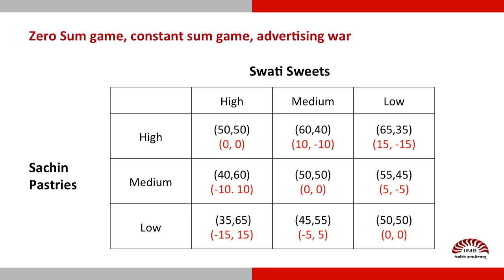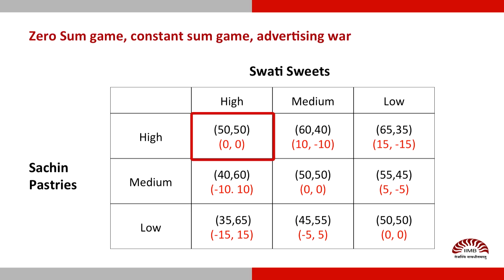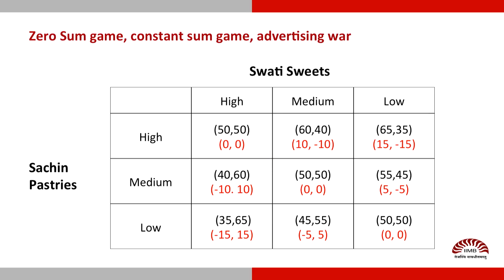The payoffs are a little interesting this time around. You can see in black we have 50-50, 60-40, 65-35, and so on. What we mean is that the two players Sachin and Swathi currently enjoy 50% of the market each. Depending on how much each of them advertises, they can change the market share. If they both have high levels of advertising, the market share remains at 50-50. Whereas if Sachin advertises a lot and Swathi advertises a medium amount, the market share changes — Sachin has 60% and Swathi has 40%. I hope by now you understand how we have arrived at the payoffs in each cell.